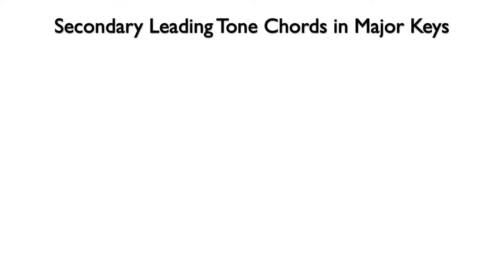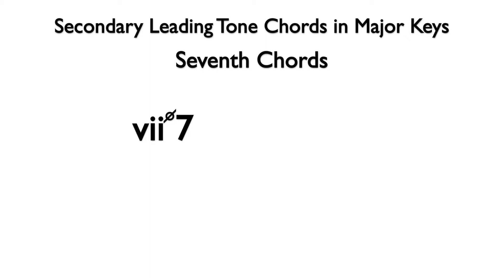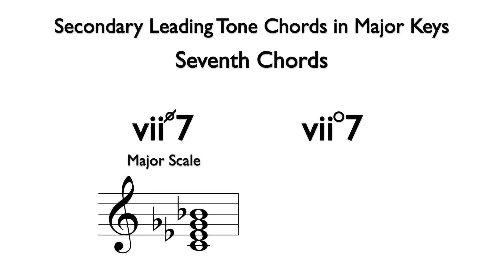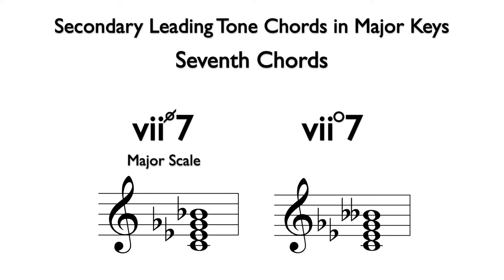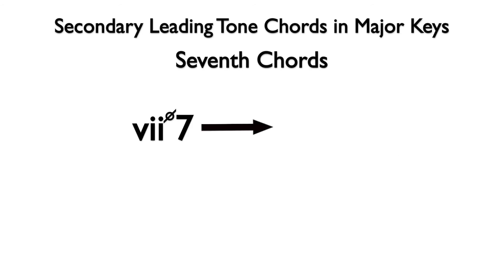Now let's explore secondary leading tone chords and their sevenths. When adding sevenths to diminished triads, we come up with two possible chords: the half-diminished seventh chord and the fully diminished seventh chord. The half-diminished seventh chord is the leading tone chord — Roman numeral seven half-diminished seven — that comes from the major scale. This chord is a diminished triad with an added minor seventh interval. The fully diminished seventh chord is the leading tone chord — Roman numeral seven fully diminished seven — that comes out of the harmonic minor scale. When using secondary leading tone chords, half-diminished seventh chords can lead to major chords.